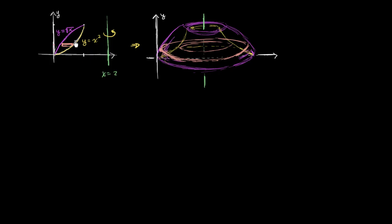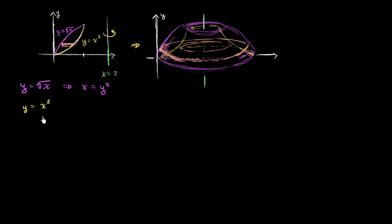To find the volume of one ring, we're going to express these functions as functions of y. Our purple function y equals square root of x — squaring both sides gives y squared equals x, so x equals y squared. That's our outer boundary as a function of y. Then y equals x squared — taking the principal root of both sides (valid since we're in the first quadrant) gives x equals square root of y. That is our inner function.